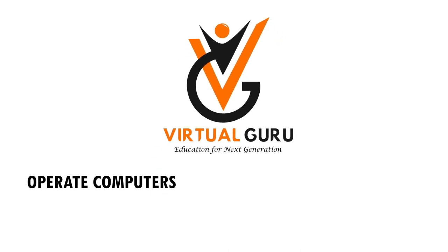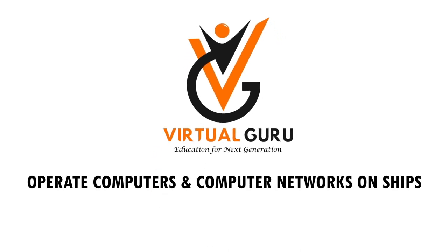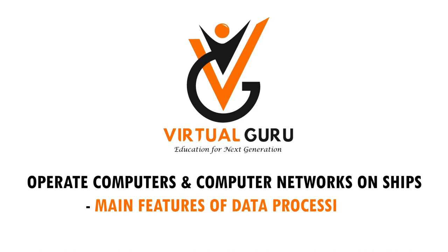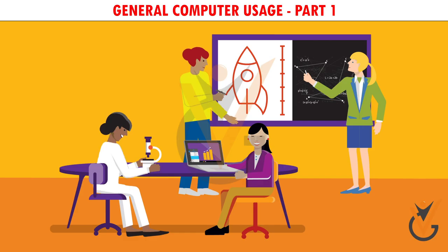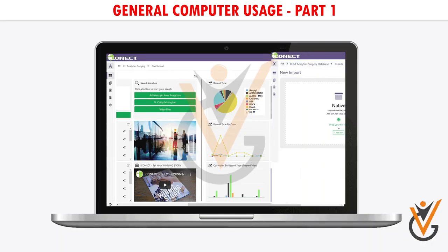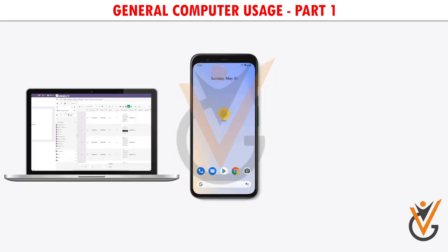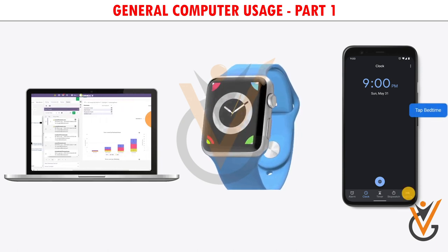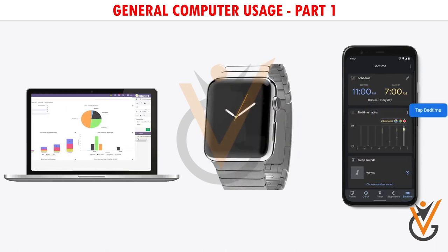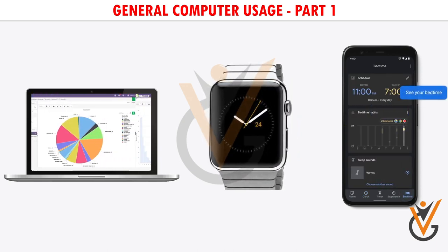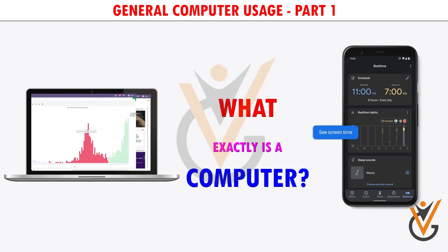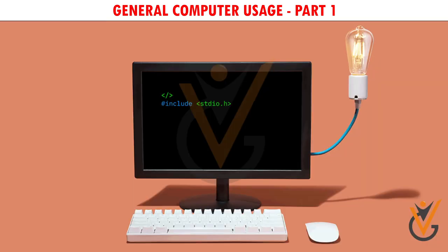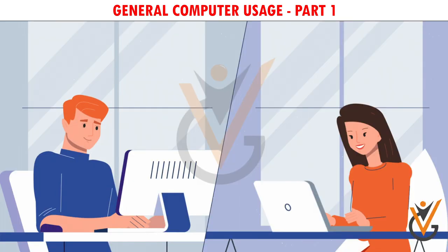Computers are used to operate computers and computer networks on ships. Main features of data processing: computers are all around us, from laptop computers to smartphones to smartwatches — they're changing the way that we live our lives. But have you ever asked yourself, what exactly is a computer?